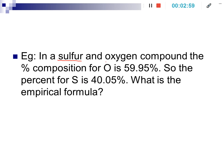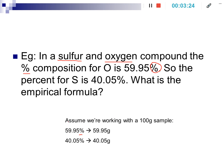Let's try it out. We have a compound with sulfur and oxygen, and we are given the percent composition. So we're going to take these percentages and convert them to masses, then convert the masses to moles, express that as a ratio, and we want that ratio to be in whole numbers — the lowest possible ratio. Assuming a 100-gram sample, 59.95% becomes 59.95 grams of oxygen, and we would have 40.05 grams of sulfur.